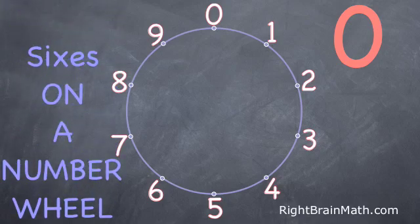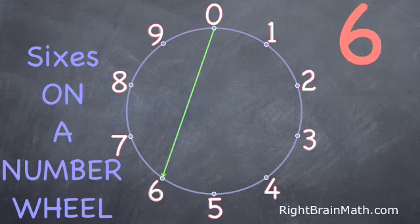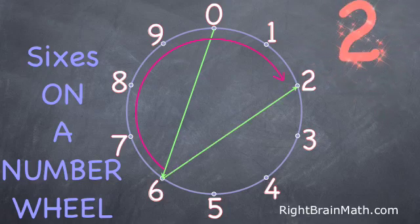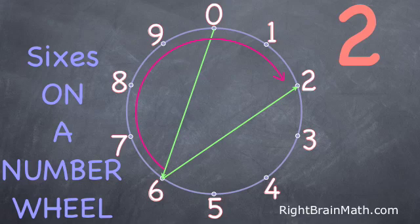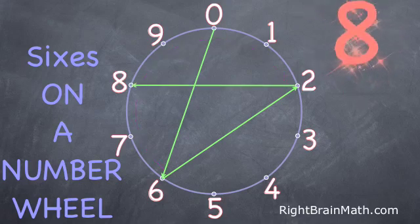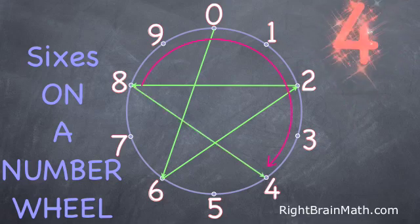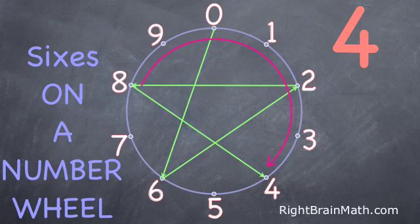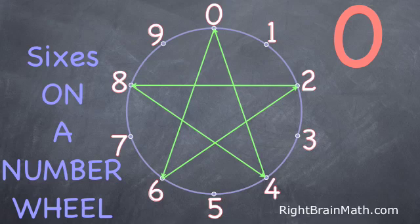Now here's another number wheel to do the ones digits of the sixes. This time we'll go around from 0 to 6 and make our line. Next we'll go around from 6 to 2 — you can notice that we went past 0 and the 2 is smaller than 6, and our tens will have gone up. Next we go around to 8, and then we go from 8 to 4, having again gone past 0, and then we end by going to 0. We have made the same star but backwards — isn't that amazing!